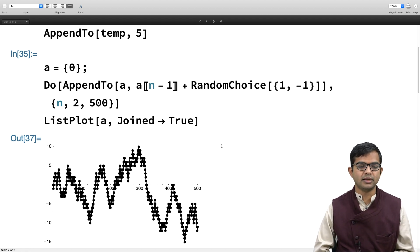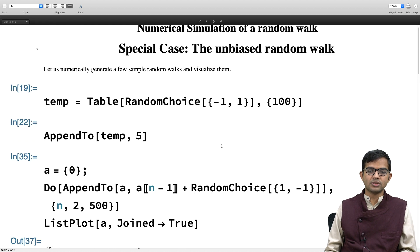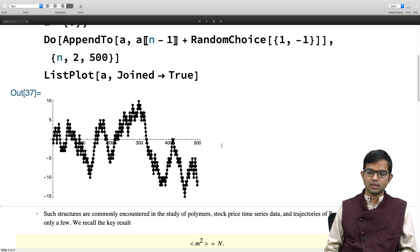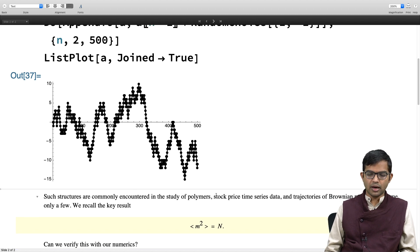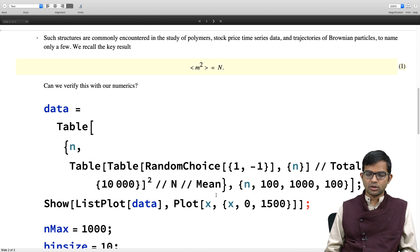Having shown you a simple one-line code with a do loop to generate a random walk, our goal is to test the average of m squared equals n result. Such structures are commonly encountered in the study of polymers, stock prices, time series data, trajectories of Brownian particles - a very important result connecting statistical mechanics to random walk models.